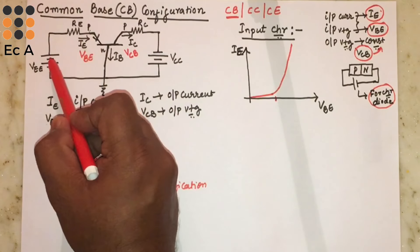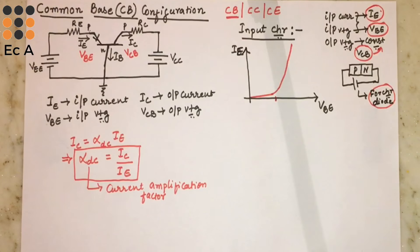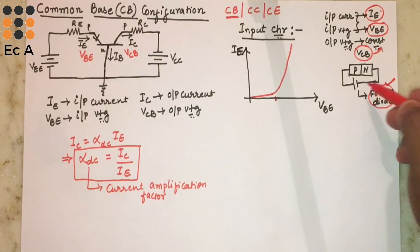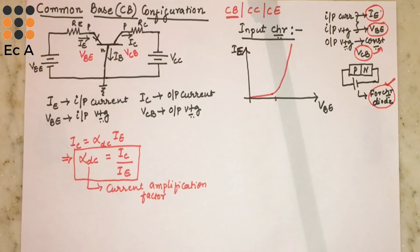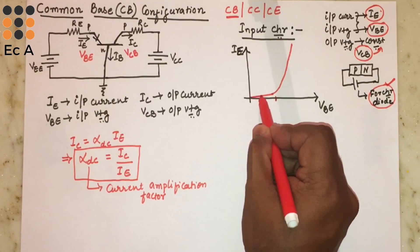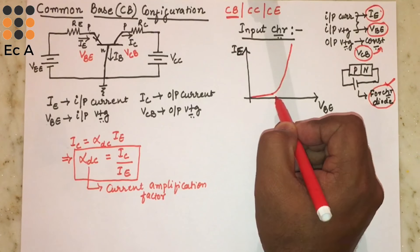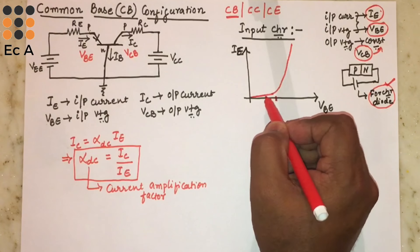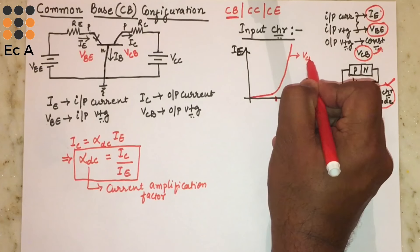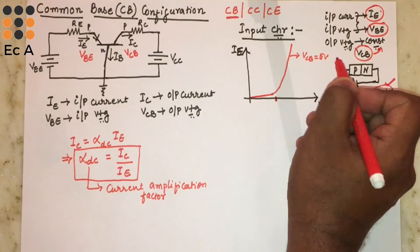Now let us understand the input characteristics of the common base configuration. We consider the input current IE, input voltage VBE, and output voltage VCB which is kept constant, and we plot a graph of input voltage versus input current. Looking at only the input side, the P side is connected to positive and the N side is connected to negative of the external voltage source, which is similar to the forward characteristics of a PN junction diode.